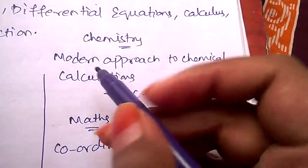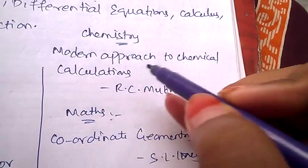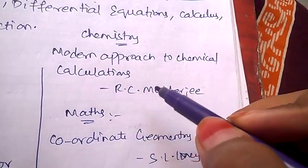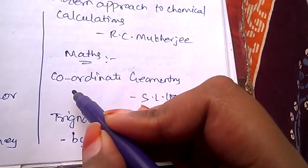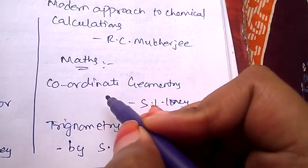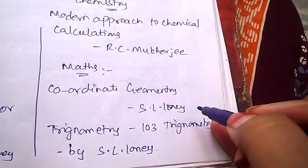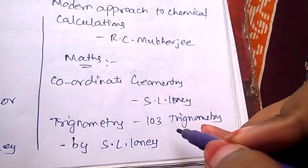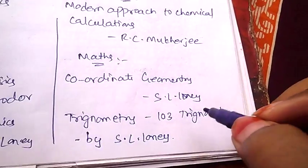Coming to chemistry, Modern Approach to Chemical Calculations by S.L. Loney, and for mathematics, Trigonometry by S.L. Loney. So these are the standard books and important topics for JEE Mains.